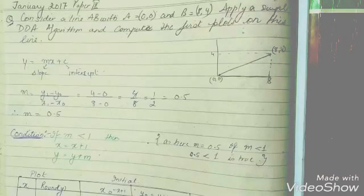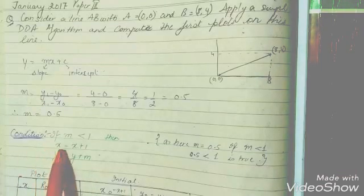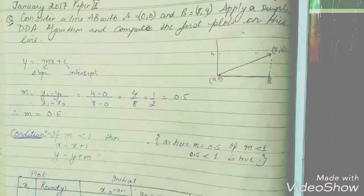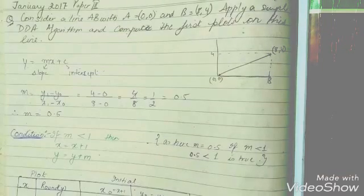...we need to choose the condition which will help us in computing the next pixel of the line. So in this case, the slope of the line M is less than 1. So in that case, the value of X is going to be incremented by X plus 1 and the value of Y is going to be incremented by Y plus M.